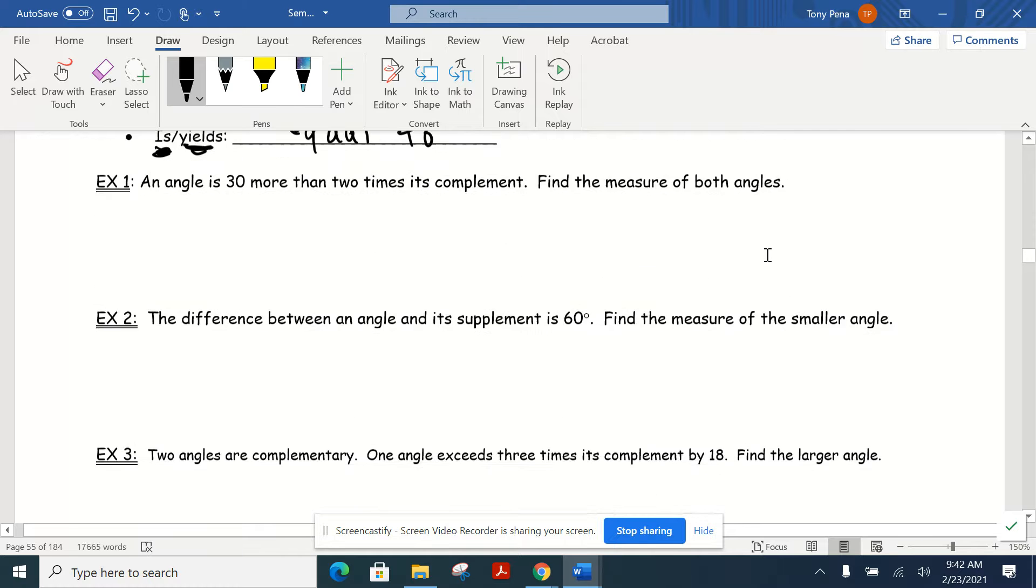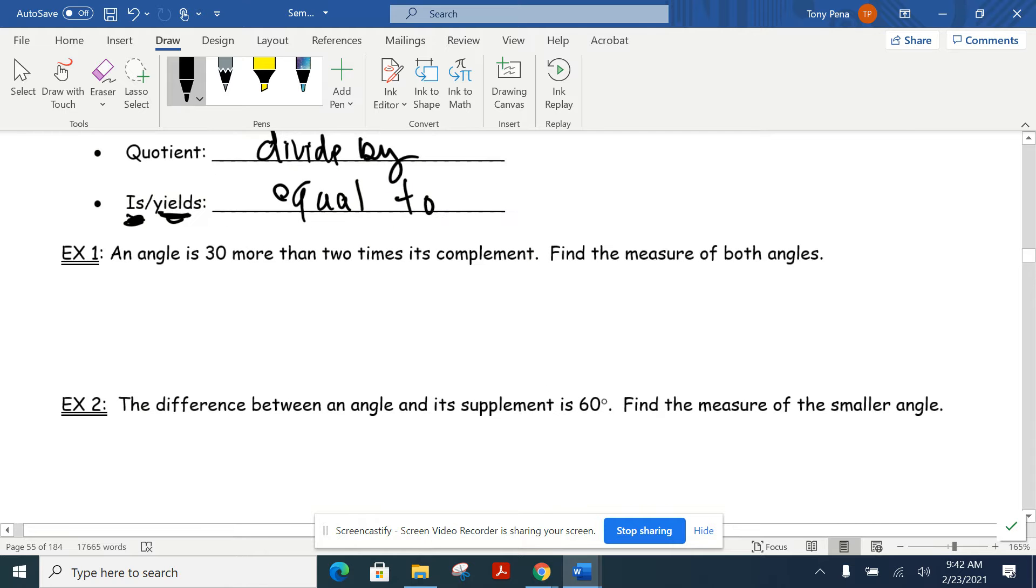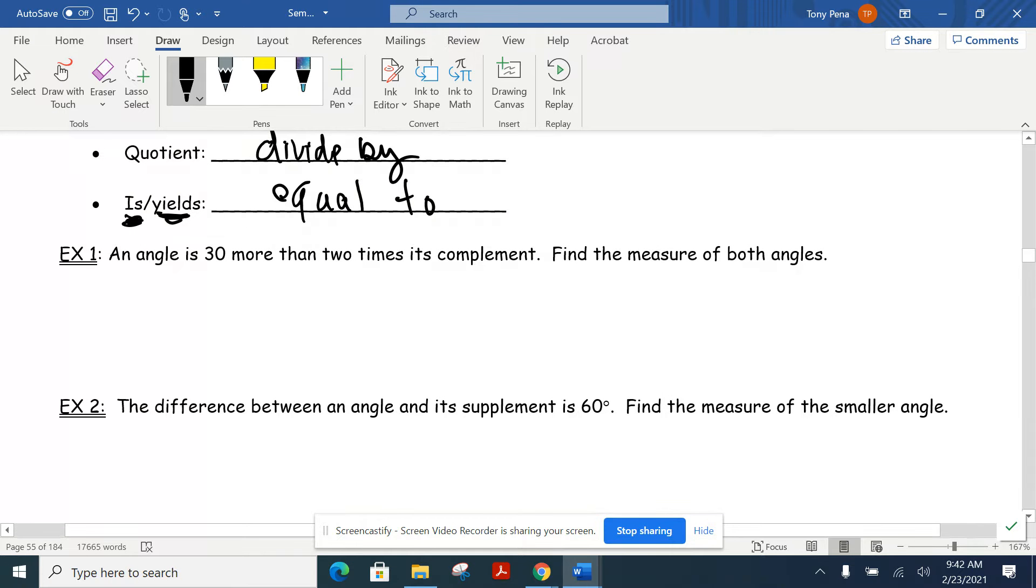So let's dive in. Number one, it says an angle is 30 more than two times its complement. We want to find the measure of both angles. So one of the key things, whenever you would have been introduced to little algebra word problems, one of the things you were probably encouraged by your teacher to do is define a variable. So what we have here, notice how we have a complement. And remember, not only complement tell us this, but that means we have two angles. The word both also implies that. So what we have, or where we're going to define these, is our first angle is how I'm going to define one of them, and I'm going to define the other one with the phrase second angle.